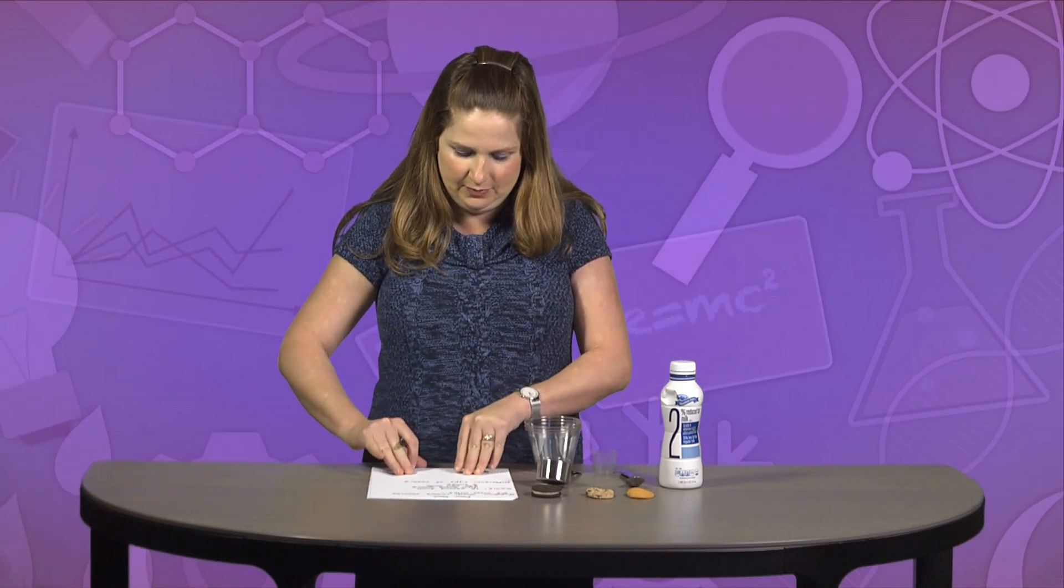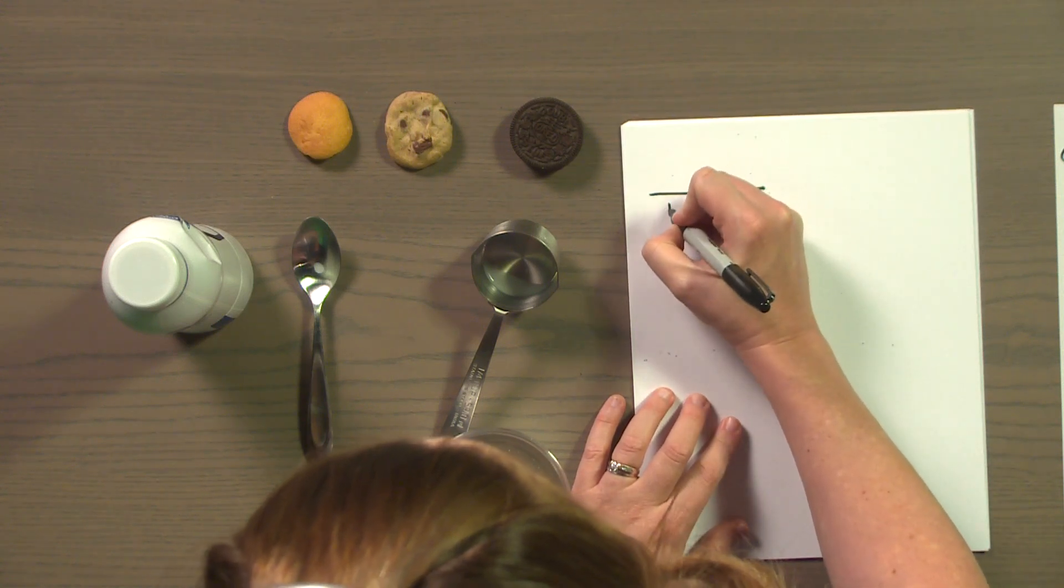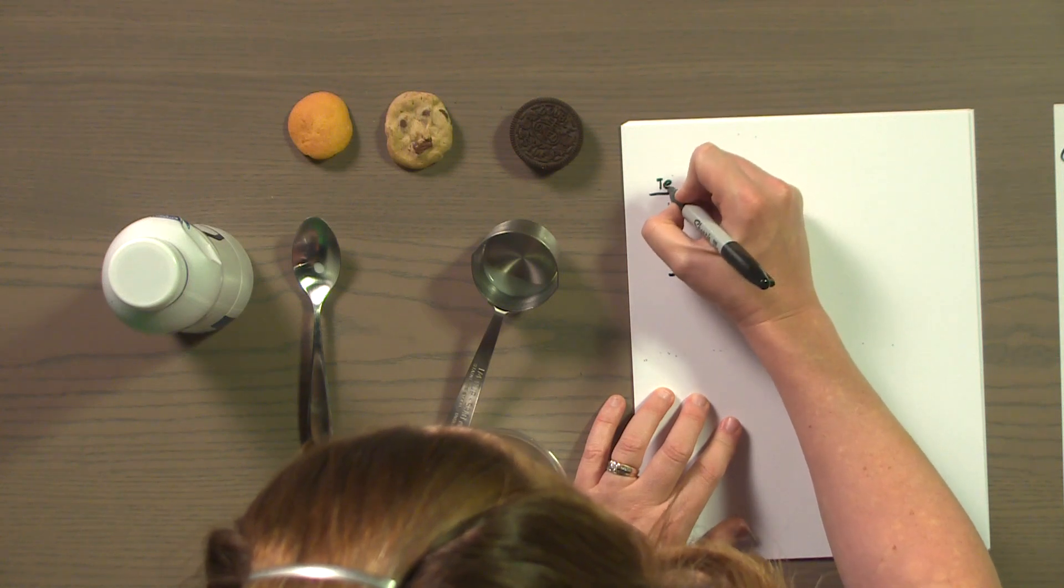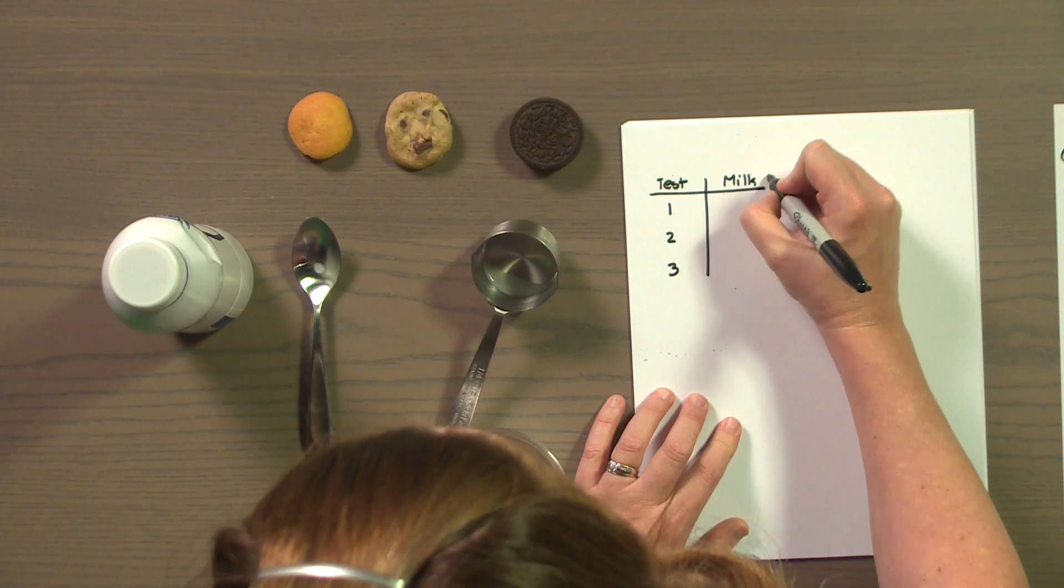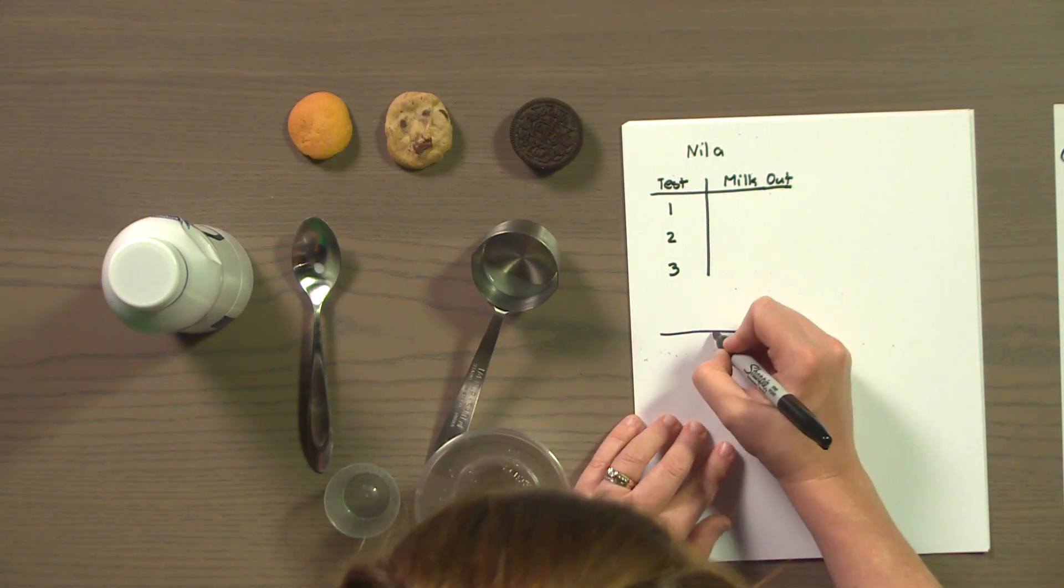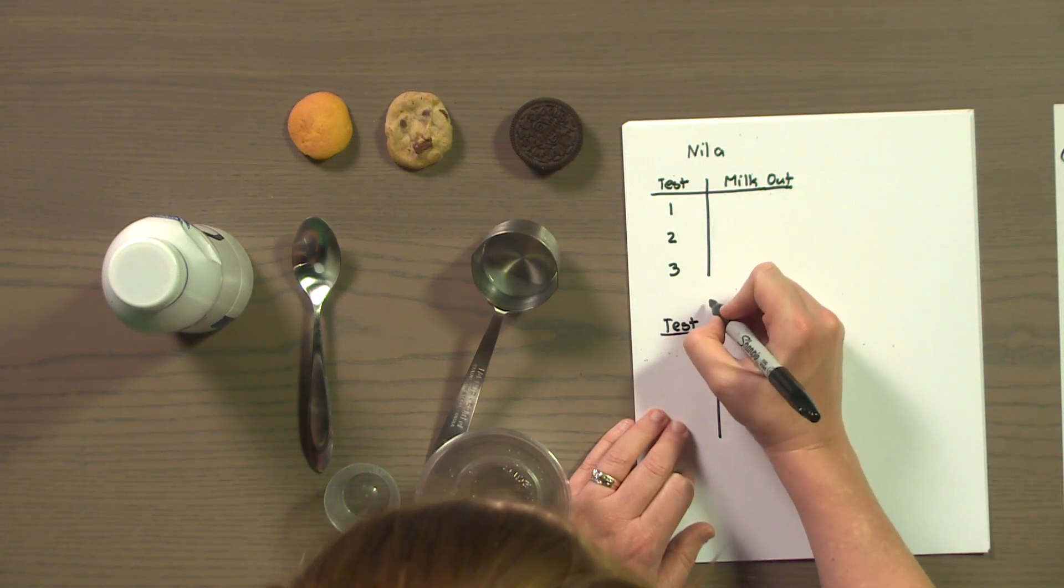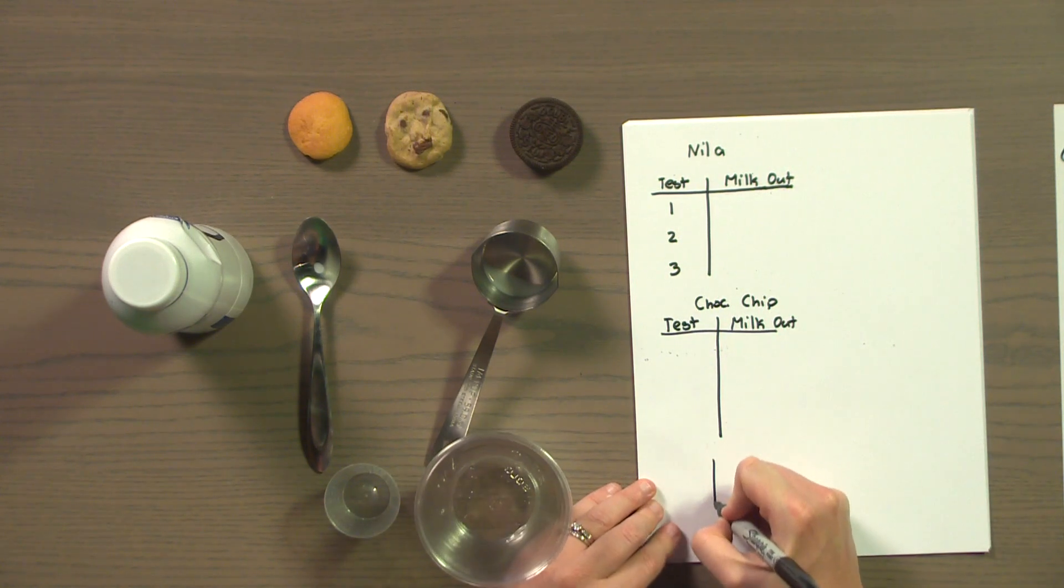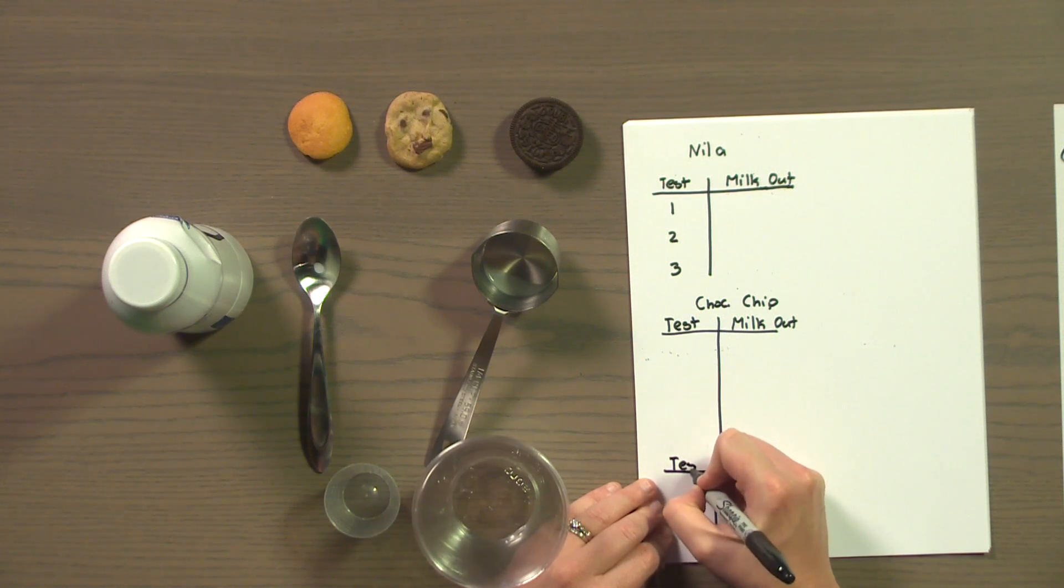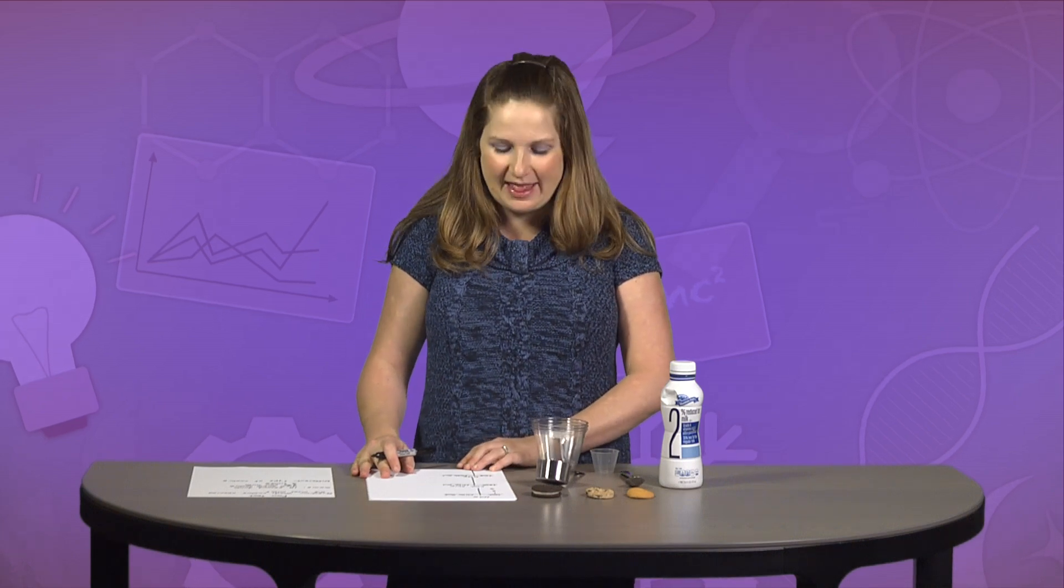Last thing we need to plan is how we're going to record the results. We'll use a different t-chart for each cookie. Go ahead and make the t-charts along with me so we can record the results together. For my t-chart, I need test 1, 2, and 3, and milk. This one will be the Nilla, this one will be the chocolate chip, and then last, the Oreo. So label the test number and how much milk comes out. Your t-chart should look something like this.